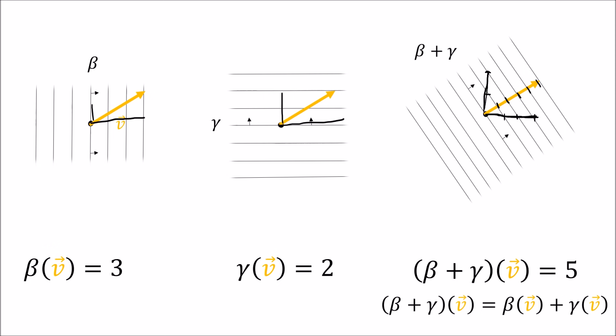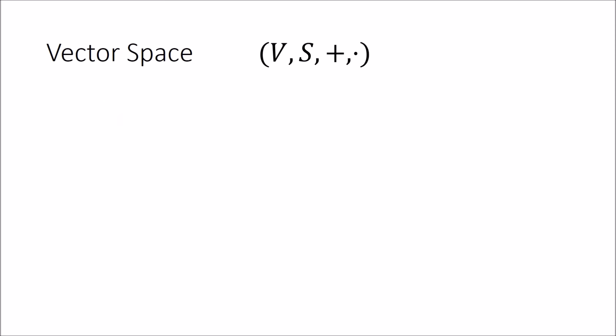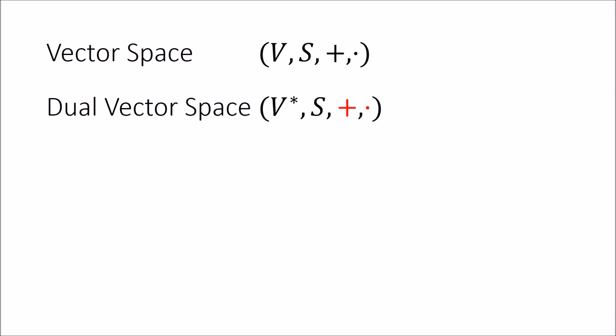So we've shown that covectors have sensible scaling and adding rules. Things that we can add and scale form a vector space. If we have some ordinary vector space V with adding and scaling rules, the set of all covectors that act on the vectors of V form a new vector space called the dual space, denoted V star. This has a different set of adding rules and a different set of scaling rules — the rules for covectors are different from the rules for adding and scaling vectors like arrows.